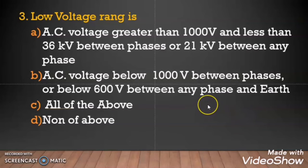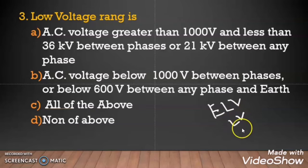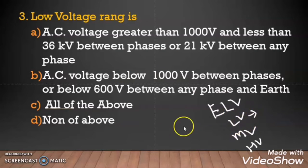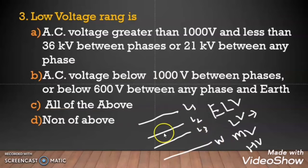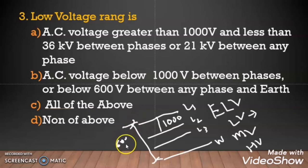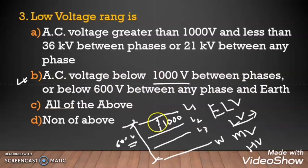Question 3: Low voltage ranges. There are different voltage levels — ELV extra low voltage, LV, medium voltage, and high voltage systems. In a 3-phase system with Line 1, Line 2, Line 3, and neutral — when the voltage between any line to other line is 1000 volt or less, or the voltage between line to neutral is 600 volt or less, that system is called a low voltage system. So option B is correct: AC voltage below 1000 volt between the phases, and below 600 volt between the phase and earth or neutral.